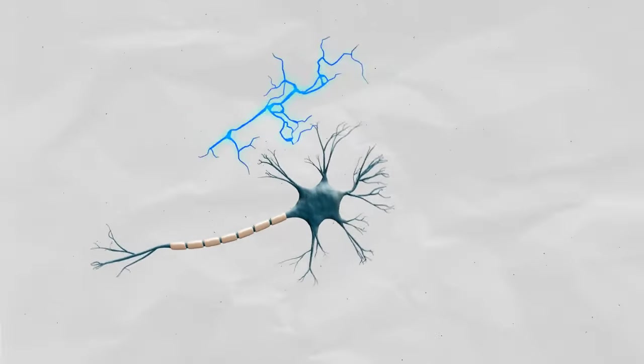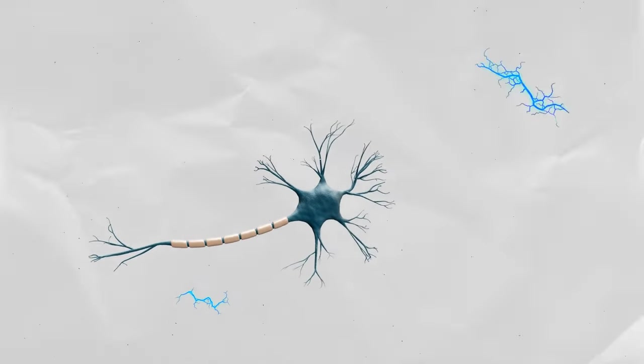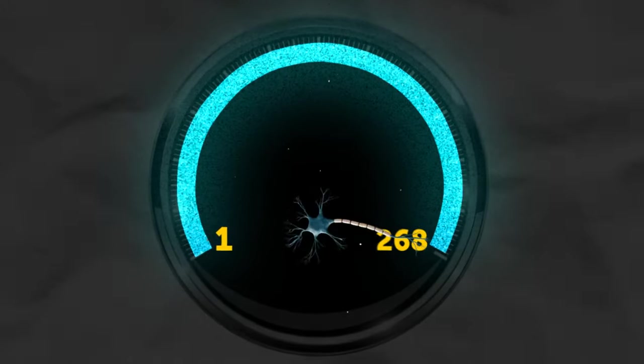Nerve cells transmit 1,000 nerve impulses a second. They travel between 1 and 268 miles per hour.